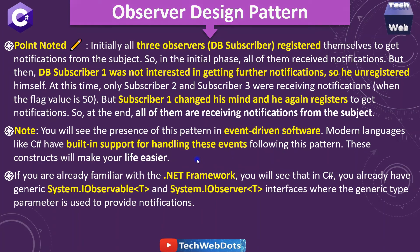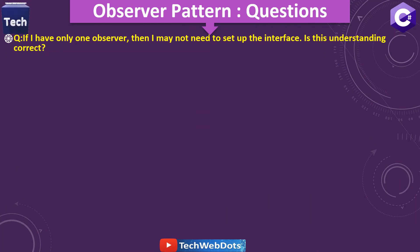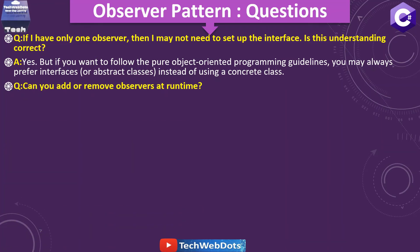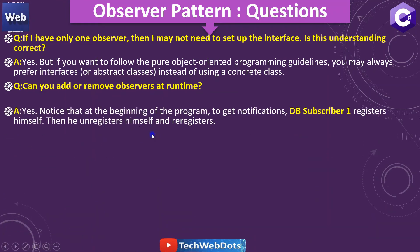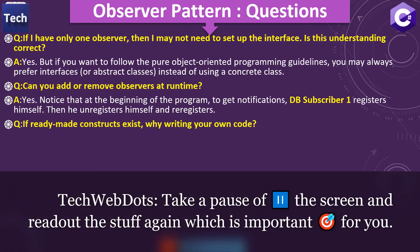Now for the Q&A session. First question: if I have only one observer, do I need to set up the interface? The answer is yes — but if you want to follow pure object-oriented programming guidelines, you should prefer interfaces or abstract classes over concrete classes. Second question: can we add or remove observers at runtime? Yes — as demonstrated, DBSubscriber1 registered, unregistered, and re-registered during the program run.